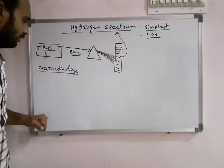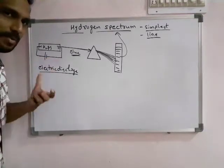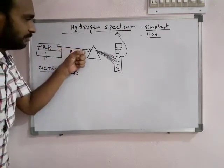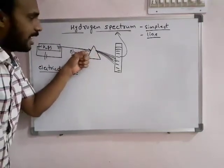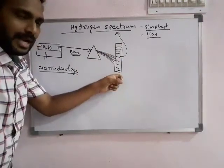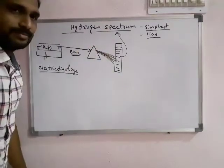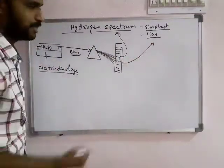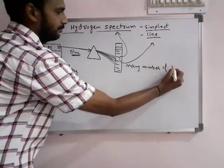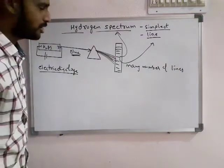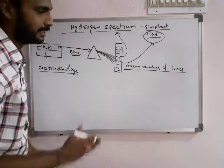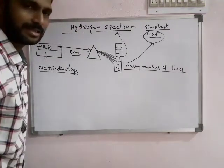The Hydrogen gas is first treated with electric discharge. In this process, it releases radiation which is posted on one of the surfaces of the prism, and the emitted radiation from the other surface of the prism is taken on the photographic plate. The picture obtained here is called Hydrogen spectrum. The picture indicates it is a line spectrum — Hydrogen spectrum consists of many number of lines which are separated from each other. These are called discrete lines, that is, separated lines.